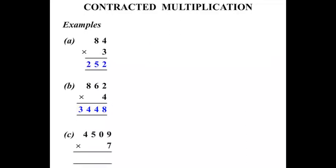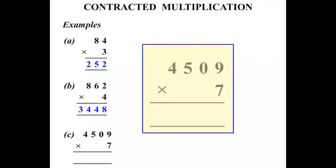The next one. 4,509 times 7. Okay, again always look to make sure that it is times. Alright, if there was a plus sign there would be completely different wouldn't it. But it is times in this lesson.